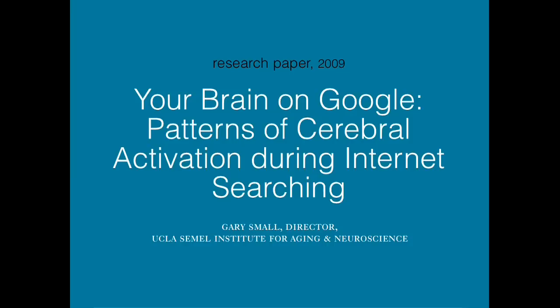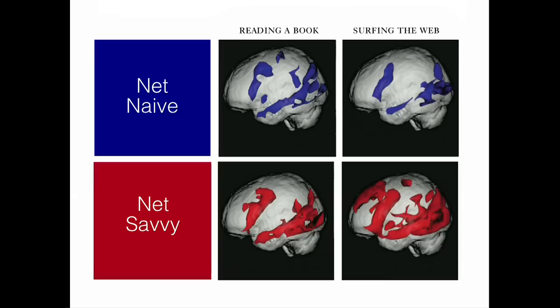Another study came out of Gary Small's neuroscience lab at UCLA, comparing two groups: one reading a book on the left and one surfing the web on the right. You can see that the net-savvy group on the right has twice as many voxels being activated when surfing the web. So it's a whole new form of storytelling.